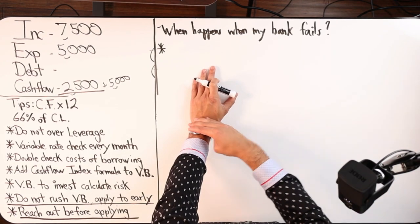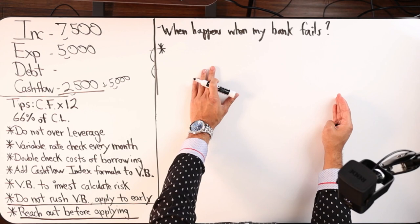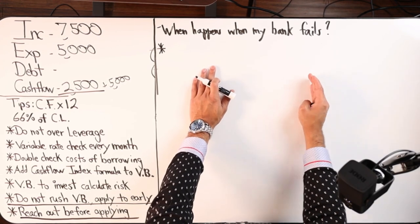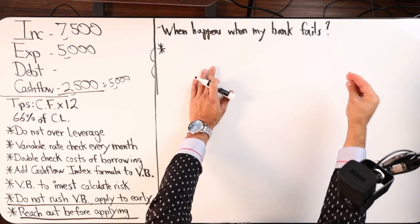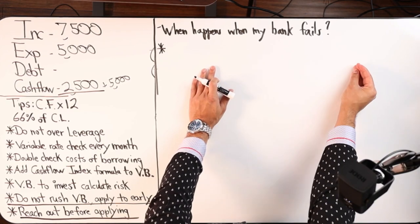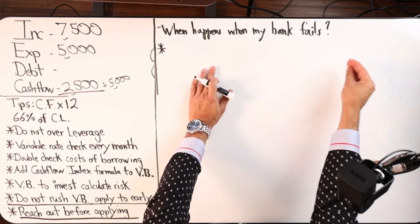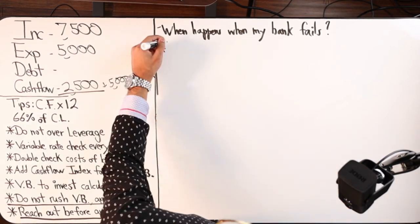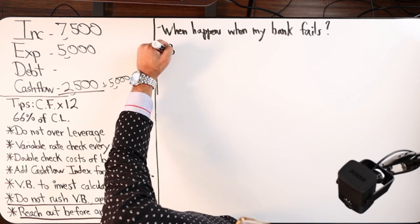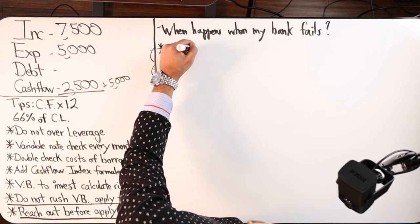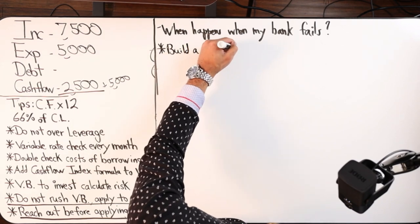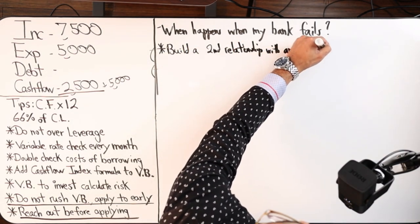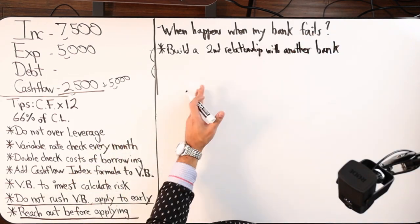If we go back in time prior to First Republic Bank having all these issues, what we could do—and for everybody watching that is already doing velocity banking—is build a secondary relationship. Build a second relationship with another bank. That's the first thing that comes to mind.